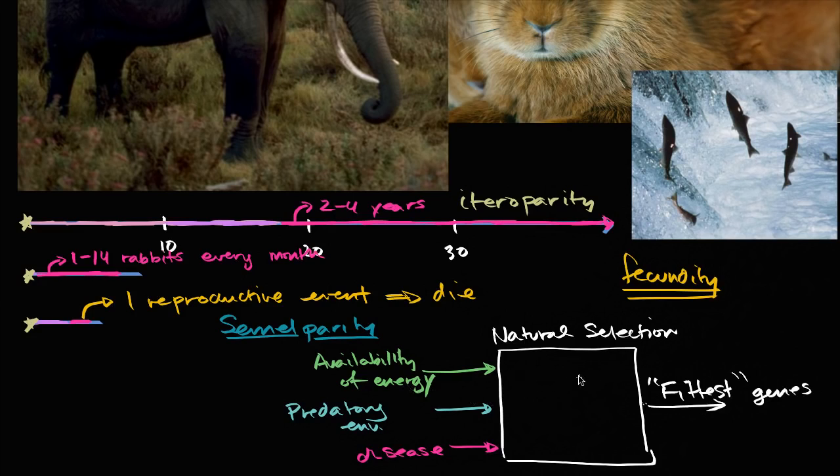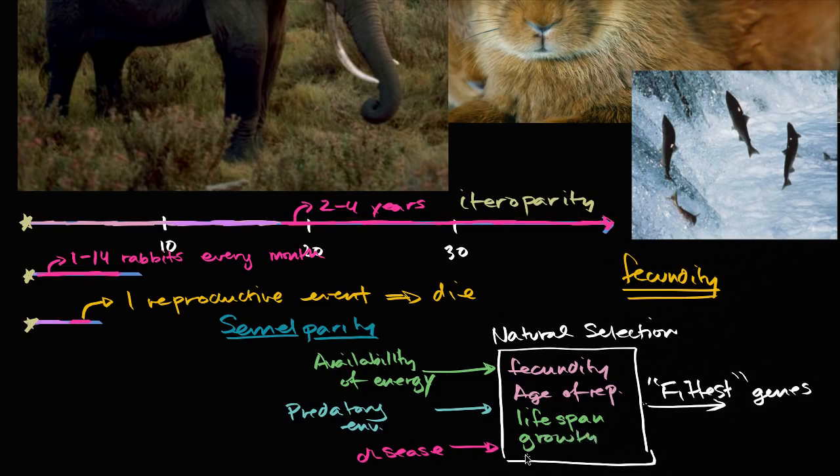And in terms of from a species point of view, the various dials. What does a species decide to do given these constraints? The various dials are fecundity, rate of reproduction, age of reproduction, things like lifespan, growth, health. And a species and an organism is making trade-offs all of the time.